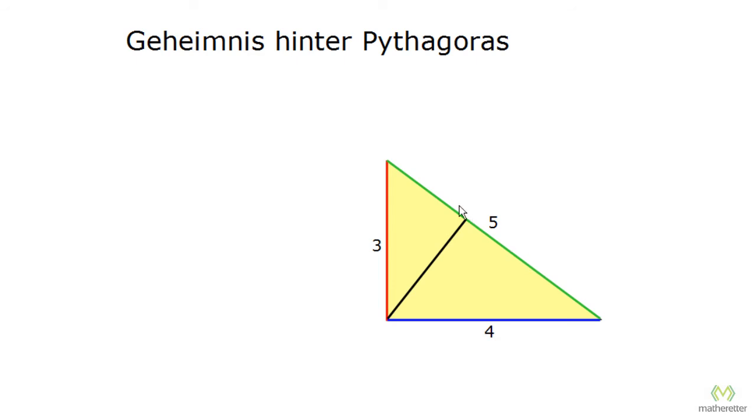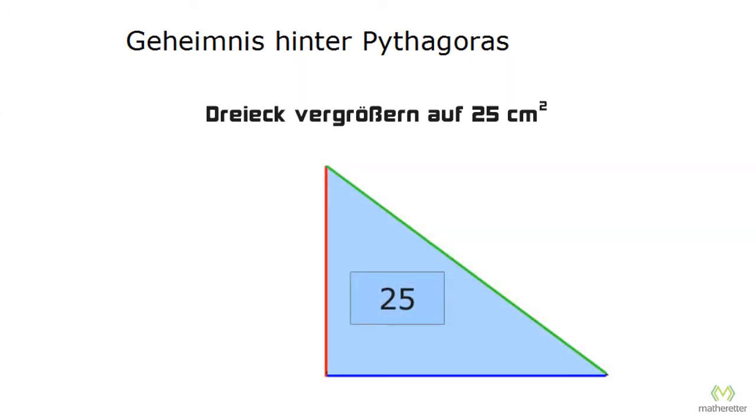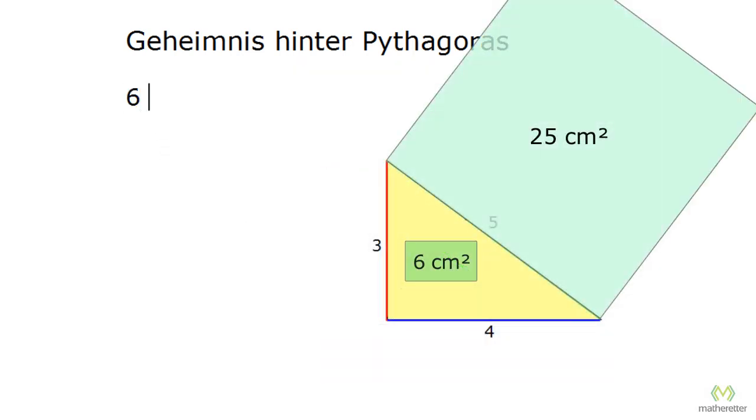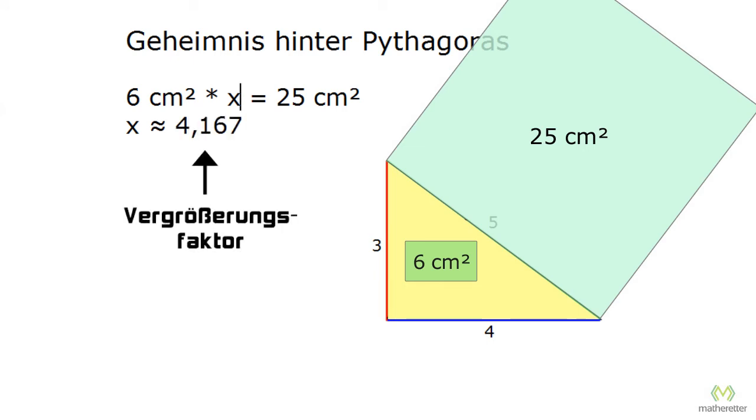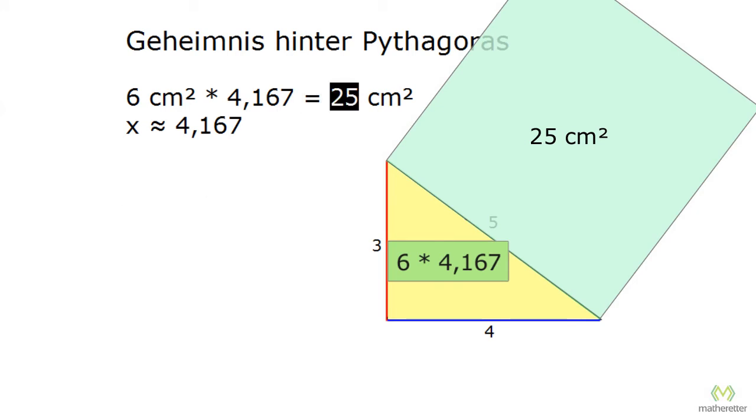Next we want to find out, what is the relationship between our triangle's area and the area c squared, which is 25 square centimeters? Or in other words, with what factor do we need to enlarge our triangle so that it has the same area as our square? We can ask, 6 square centimeters times what equals 25 square centimeters? We divide the 6 square centimeters over here, and then we get 25 divided by 6, and that's approximately 4.167.